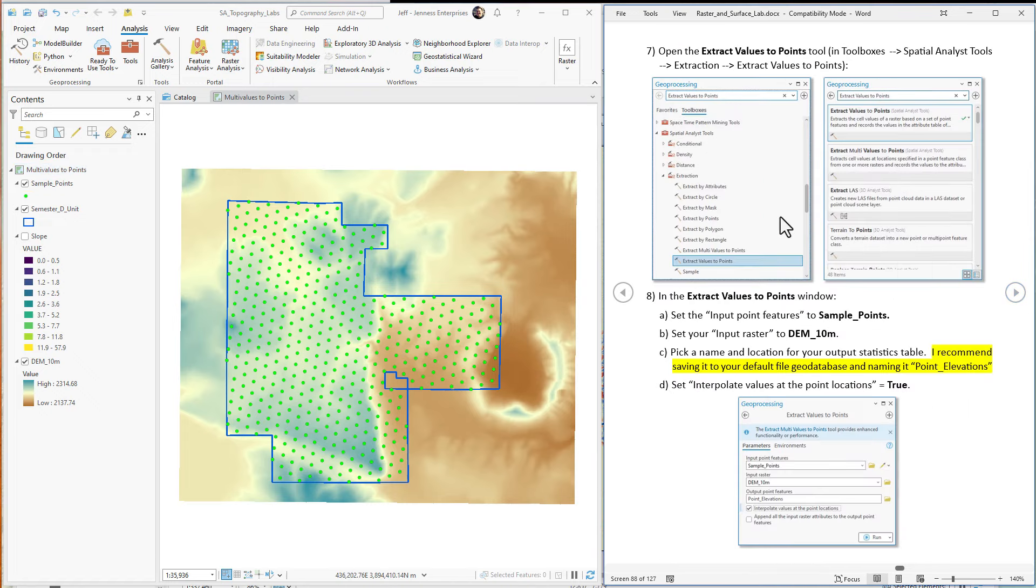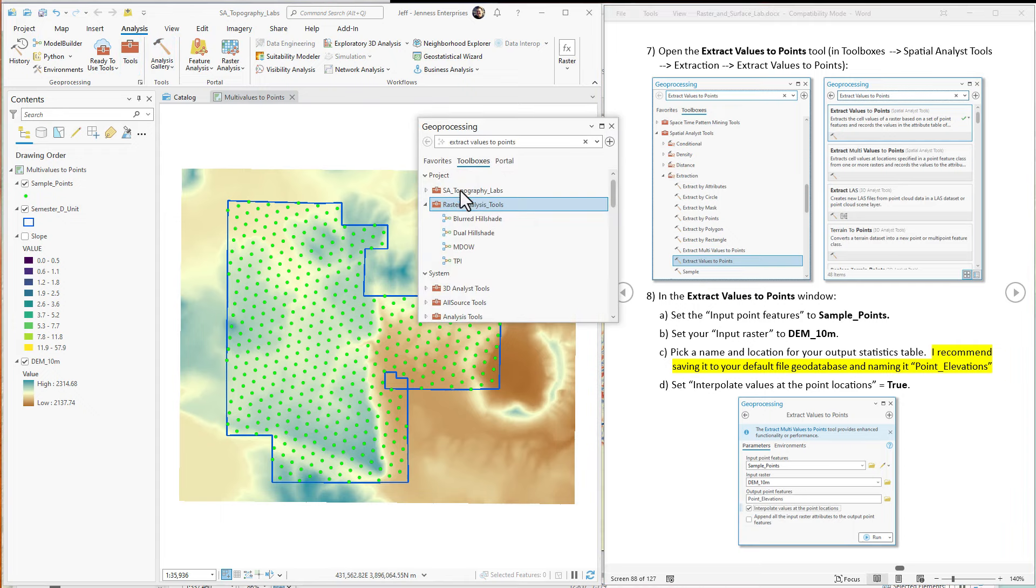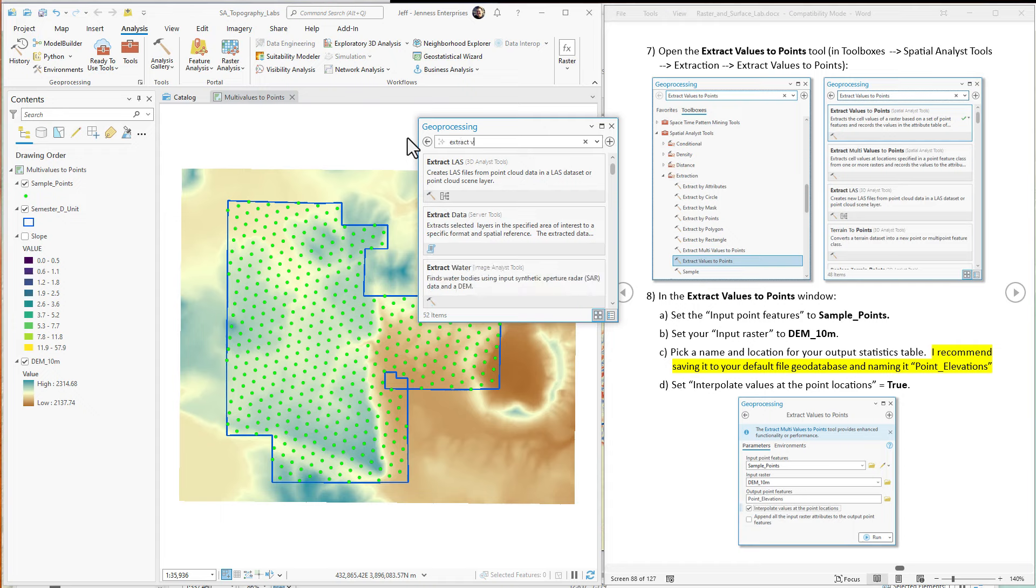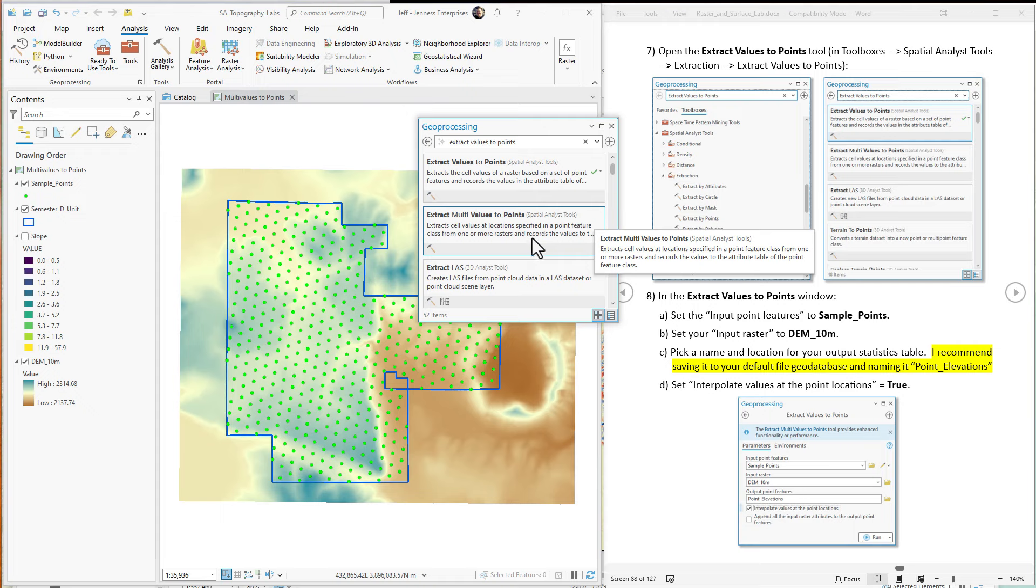Okay, first step, let's open up the tool, the extract values to points tool. Come to here. Just type in extract values to points. This is the tool we're going to use. I want you to notice there is another tool here, the extract multi values to points.